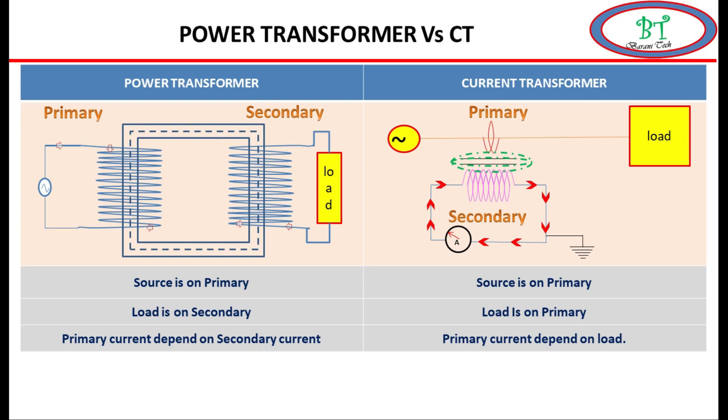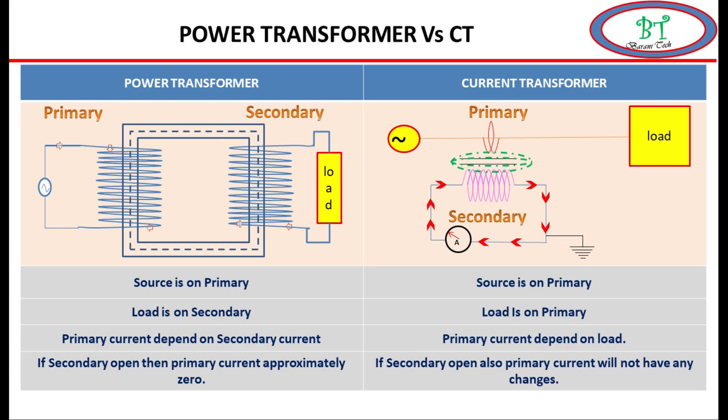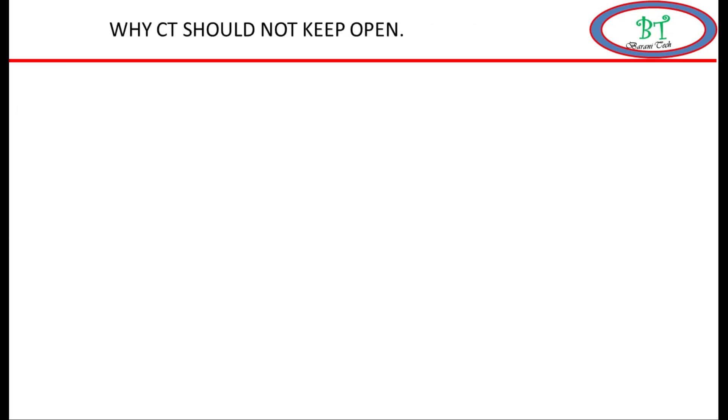For power transformer, if the secondary side gets open, the primary current approximately becomes zero. But for CT, even though the secondary side gets open, the primary current will not change. These are the major differences in working between power transformer and current transformer.